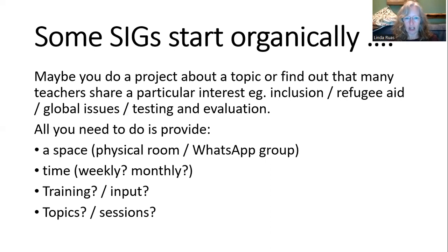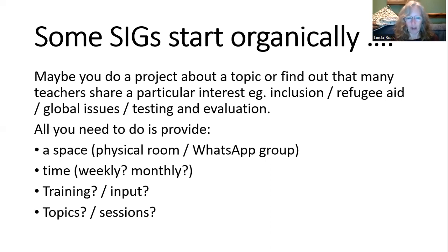All you need to do as the teaching association is to provide a space — this can be a physical room or a WhatsApp group, probably more useful nowadays — and a time, maybe to meet weekly or monthly. Maybe they will need some training and input and you can help organise that as the umbrella teaching association. If they are passionate about a particular special interest, they will want to meet, share, train, help each other, and the special interest group should be quite successful.